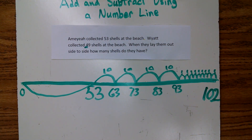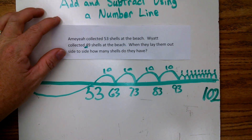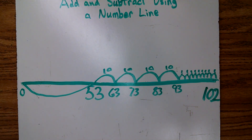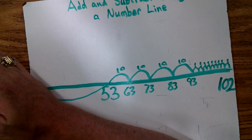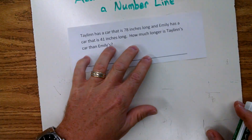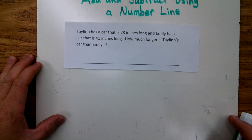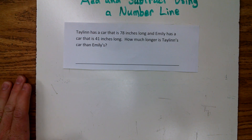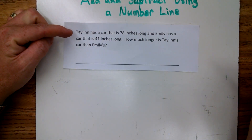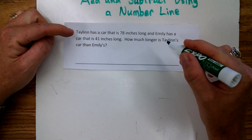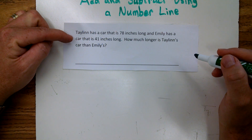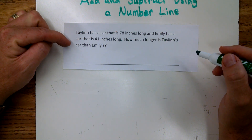That's how we do an addition problem. Now let's try doing a subtraction problem. Taylin has a car that is 78 inches long, and Emily has a car that is 41 inches long. How much longer is Taylin's car than Emily's?